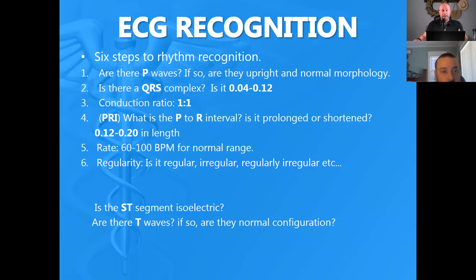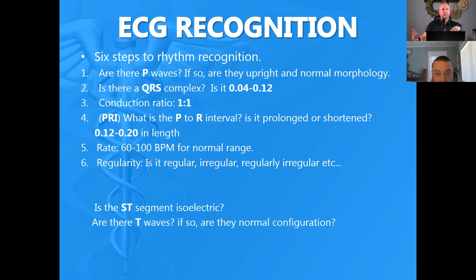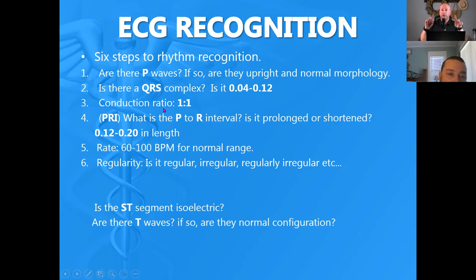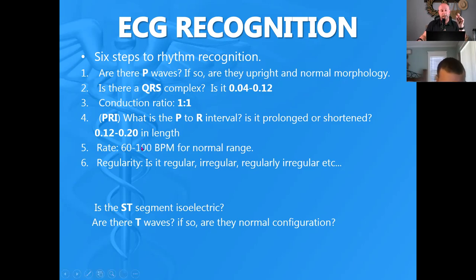Six steps to rhythm recognition — always use this method or you'll go off in another direction and forget what you're looking at. Always look at your P waves first — make sure they're upright and normal in appearance. Then the QRS complex — must be within the time limits of 0.04 to 0.12 seconds. What's the conduction ratio? One P wave for every QRS. What is the PRI — it can't be longer than 0.20 seconds; normal is 0.12 to 0.20. What's the rate? And is the rhythm regular or irregular — an irregularly irregular rhythm is A-fib.